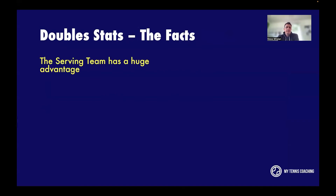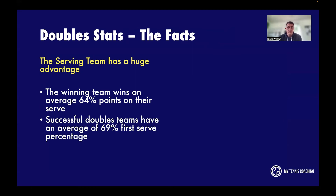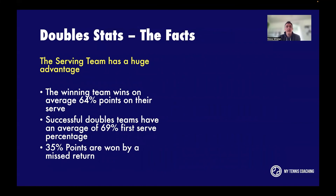Now for some stats on how doubles is actually played. The serving team has a huge advantage — the winning team wins on average 64% of their points on serve. A successful doubles team has a first serve percentage of 69%, compared to about 60% in singles — doubles teams are getting more first serves in. Placement is key, especially with the serve. Notably, 35% of points are won by a missed return, so a lot of points are lost on ball two — the return of serve — giving cheap points to the server.